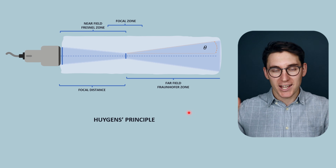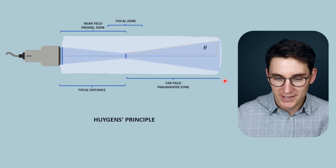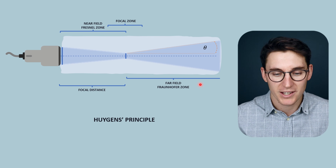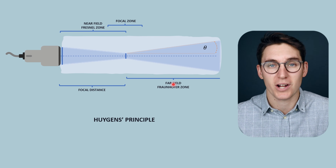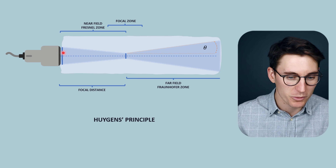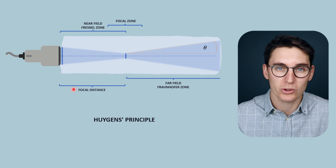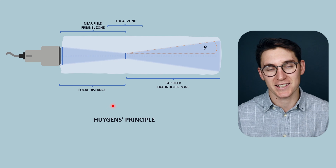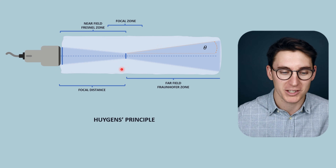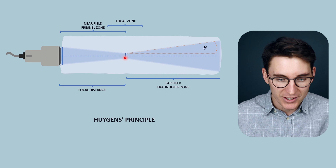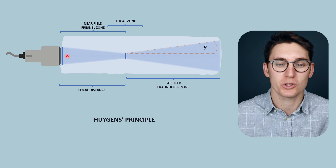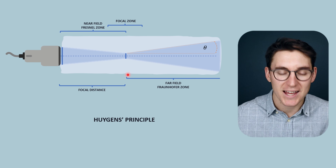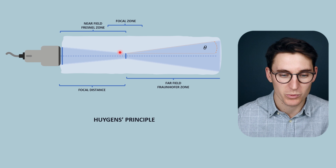Our far field is infinite - it goes until the ultrasound beam is fully attenuated, diverging out as it heads into tissue. The far field is also known as the Fraunhofer zone. The distance from the transducer to our focal point is also known as the focal distance, which you can manipulate on your ultrasound machine. The region slightly around that focal point is known as our focal zone, which has our best resolution within the image.